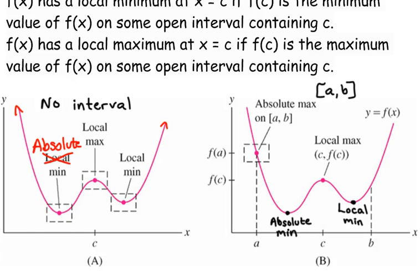Illustration A gives us the function with no specified interval — we're looking at the function in its entirety. There is a typo in the textbook on this side: this would be the absolute minimum. Technically absolute minimums are local minimums as well, but it's best to describe it as the absolute minimum because it is the minimum value of this function. So the first point is an absolute minimum.